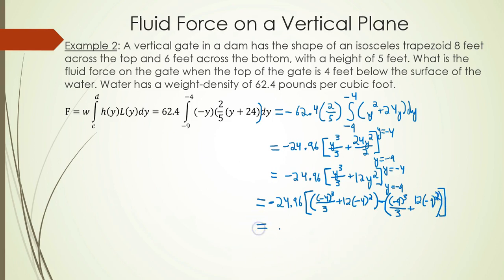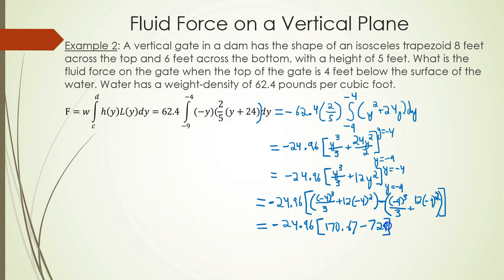Plugging in the upper bound y equals negative four and the lower bound y equals negative nine, then subtracting, and multiplying by negative 24.96, we end up with a fluid force of 13,936 pounds.